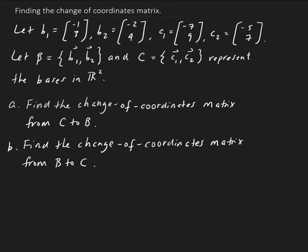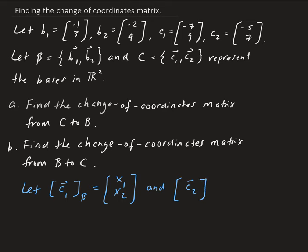The goal is to find the matrix that converts a vector in C to a vector in B. We're going to let the C vector be expressed in terms of B, and that will give us values x1 and x2. For the other vector in C, that's going to give us y1 and y2. We'll use these to construct the change of coordinates matrix.